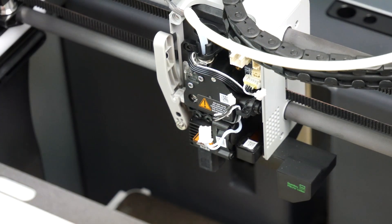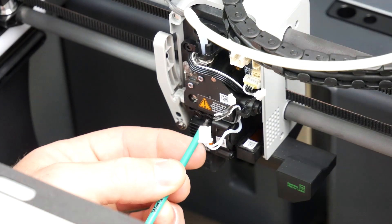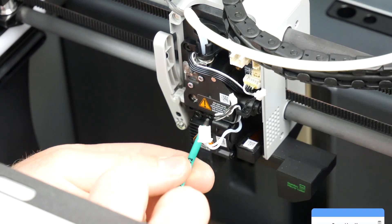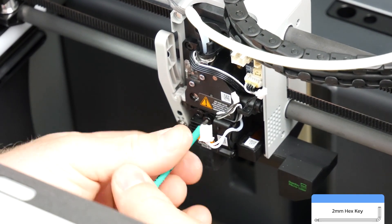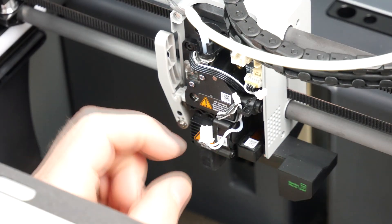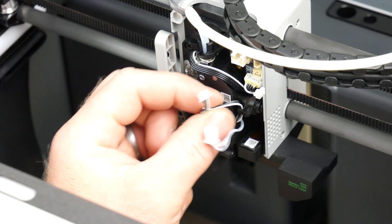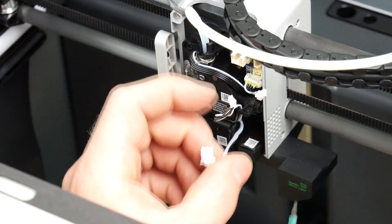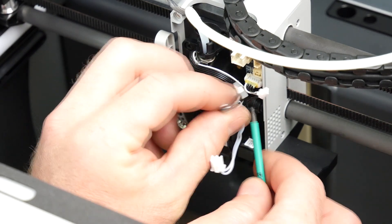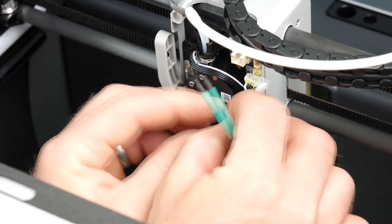Next thing we need to do is unscrew the actual hotend assembly itself using a 2mm hex key. Once we've got those two out, we then need to remove these three cables. They are being retained behind this small clip here. You just need to gently pull them out from behind the clip.